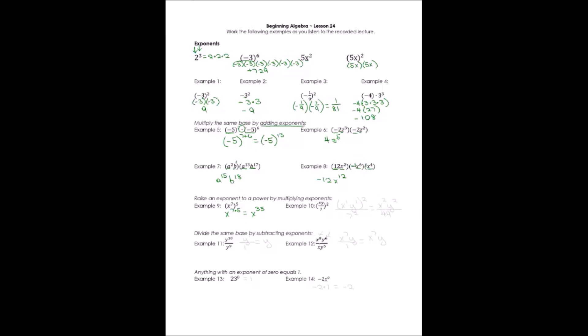Let's look at a fraction example. Each of the terms is being raised to the exponent: x to the power of 1 and y to the power of 1 would both be raised to the power of 2, and 7 would be raised to the power of 2. We do the same thing to the numerator as to the denominator when the fraction is in parentheses. So x to the 1 times 2 is x squared, y to the 1 times 2 is y squared, and it's all over 7 squared, which is 49.